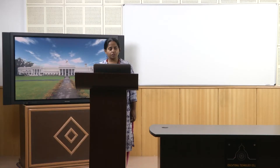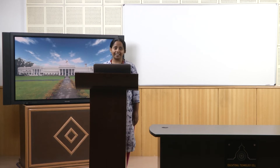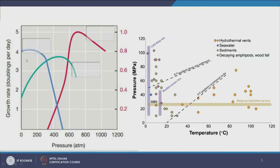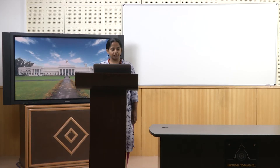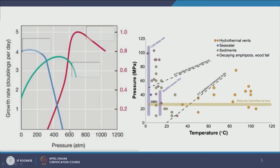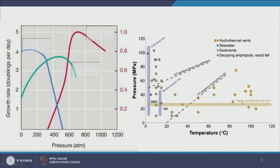In red, extreme piezophiles love extremely high pressure. Below 300 atmospheres they cannot even survive; as pressure increases their growth rate climbs, peaks around 700 atmospheres, then drops toward 1000 atmospheres. So as we descend through the ocean we move from moderately high pressure (0–200 atm) to high pressure (200–600 atm) to extremely high pressure (600+ atm), and each zone supports different kinds of microbes. The right panel combining pressure and temperature shows that deep-sea hydrothermal vents host very different microorganisms than cold deep-sea environments such as the Mediterranean.